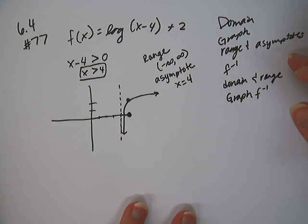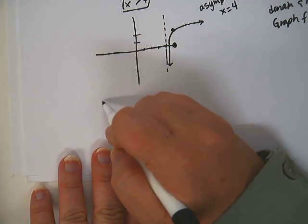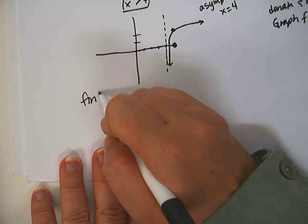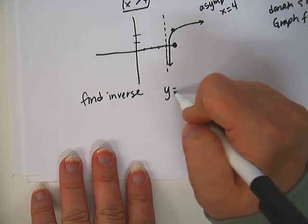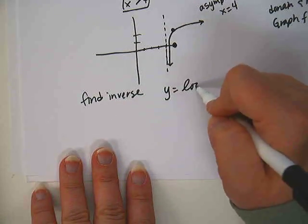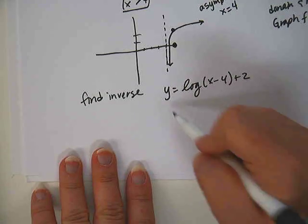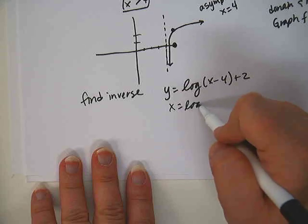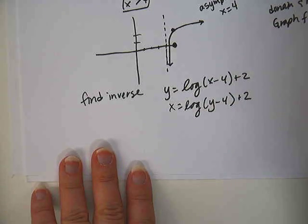Okay, now we find the inverse. To find the inverse, we trade x and y. So we go y equals, well, yeah, the f of x is a y, so we're going to trade the x and y. So x equals log y minus four plus two.